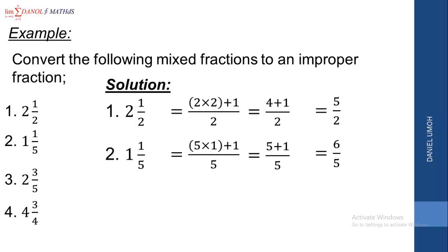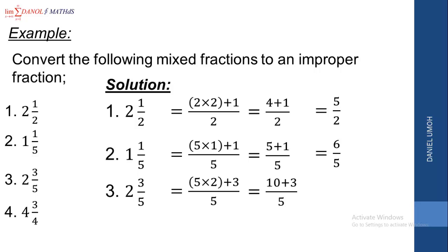Let's look at the next example: 2 whole number 3 over 5. We multiply the denominator by the whole number: 5 times 2. Then we add the numerator, plus 3. So we have 5 times 2 plus 3 over the original 5. Since 5 times 2 is 10, we have 10 plus 3 over 5, which is 13 over 5. It therefore means that 2 whole number 3 over 5 is equal to 13 over 5.